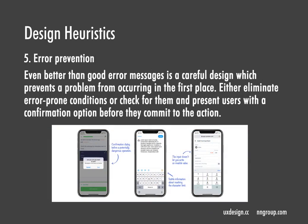Error prevention: even better than a good error message is a careful design that prevents the problem from occurring in the first place. Either eliminate error-prone conditions, or check for them and present users with a confirmation option before they commit to the action. For example, ask users before they commit a mistake, show character limits when tweeting, or use inputs that don't allow entering invalid values.